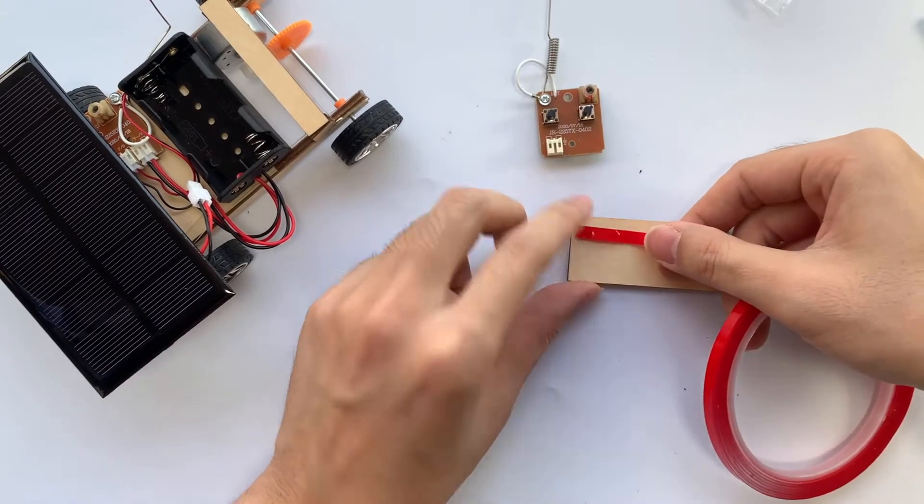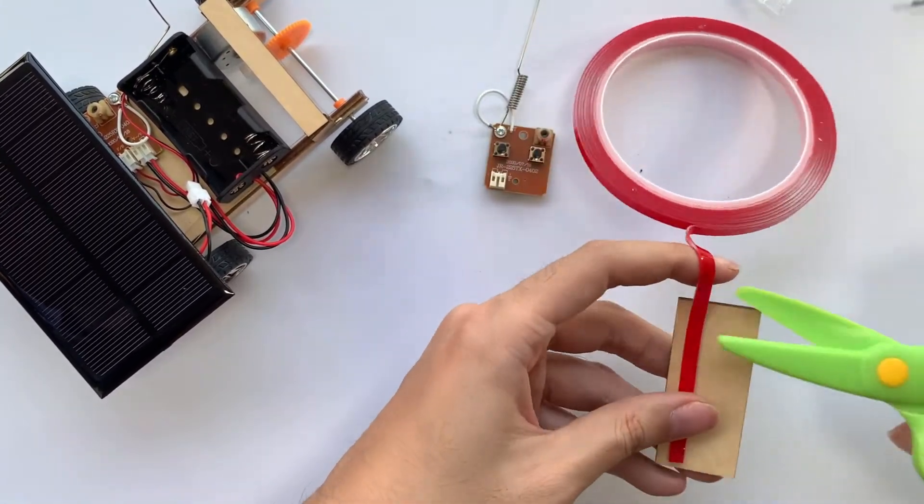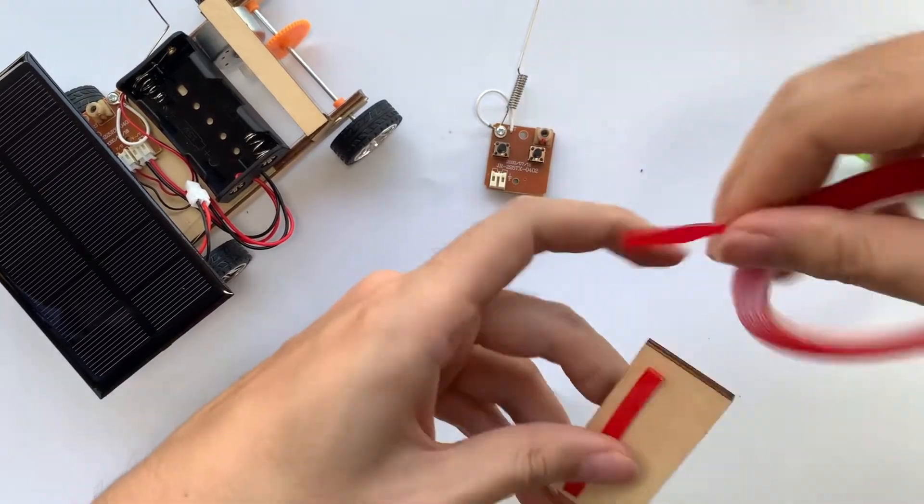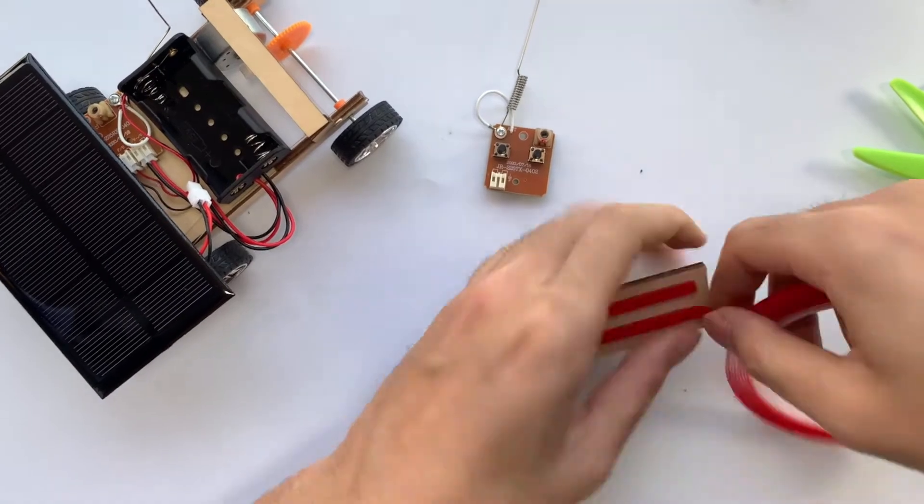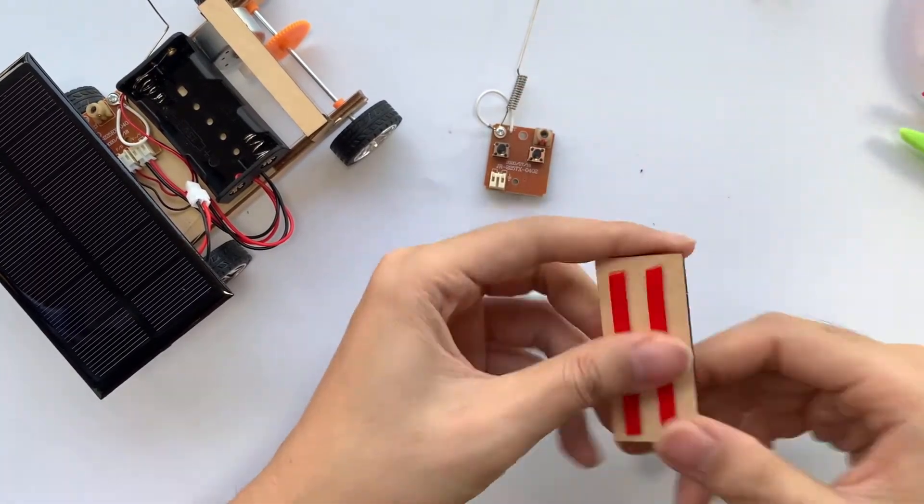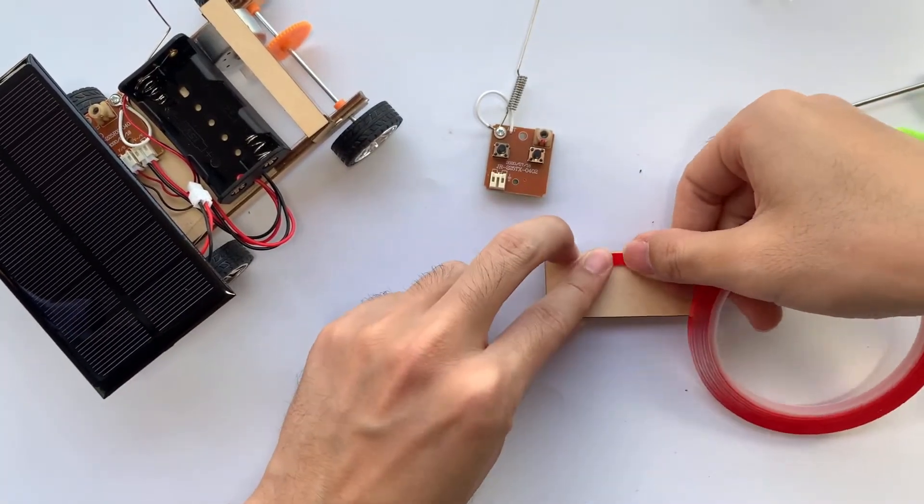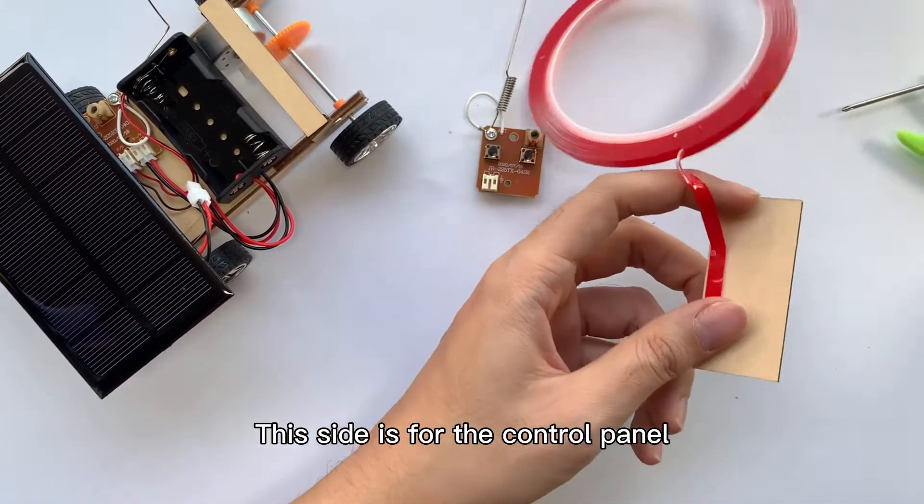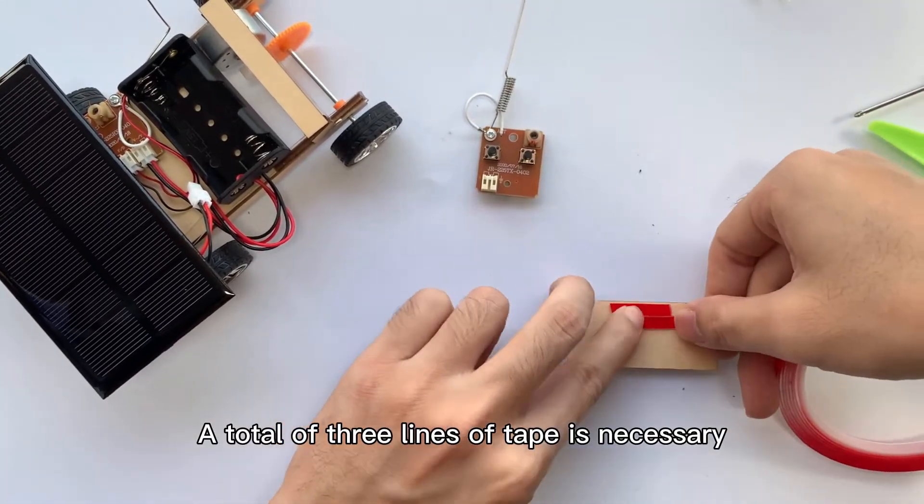Apply tape on one of its sides. This side is for the battery case. A total of two lines of tape is necessary. Then apply tape on the other side as well. This side is for the control panel. A total of three lines of tape is necessary.